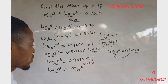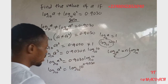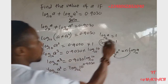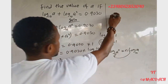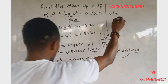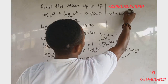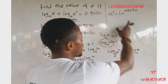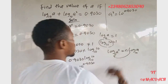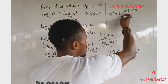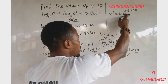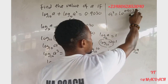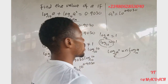This becomes: log base 10 of 'a cubed' equals log base 10 of 10 to the power 0.9030. Since log base 10 appears on both sides, they cancel. So we are left with: a to the power three equals 10 to the power 0.9030. Now we find the antilog of 0.9030.